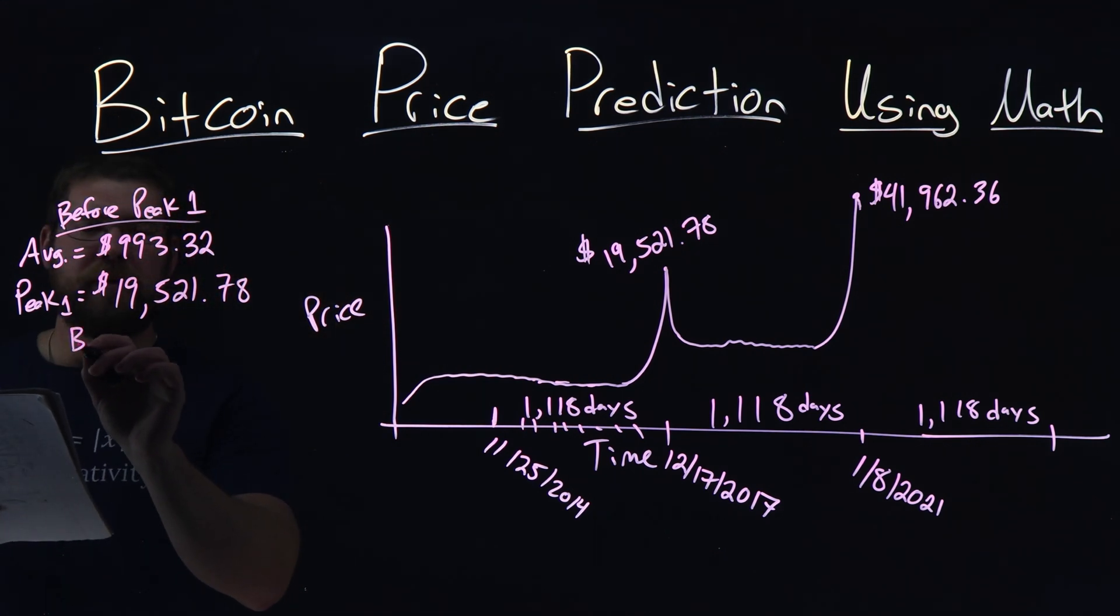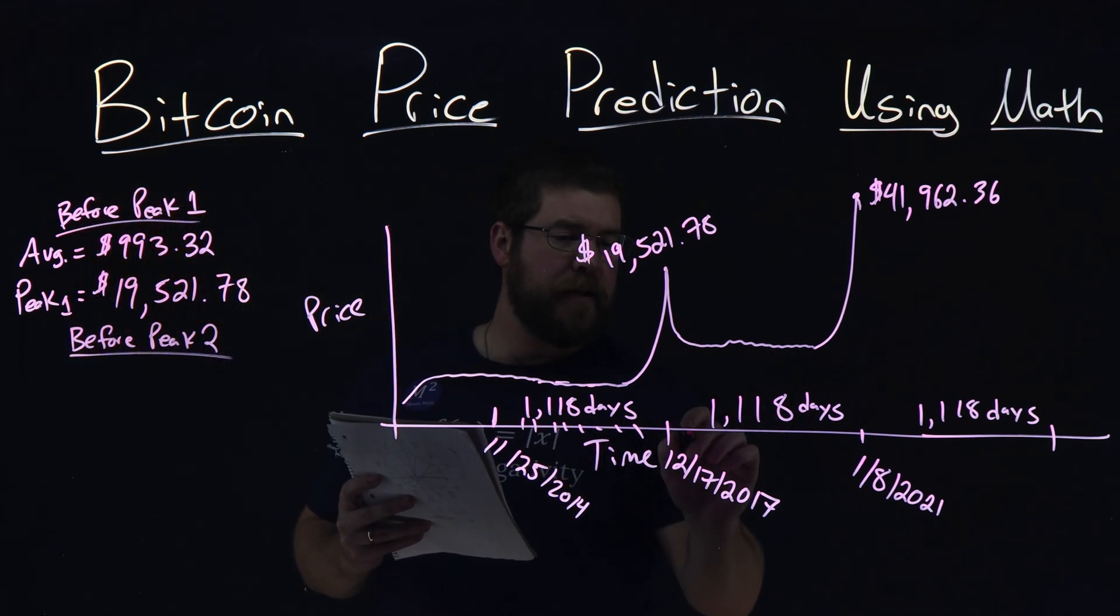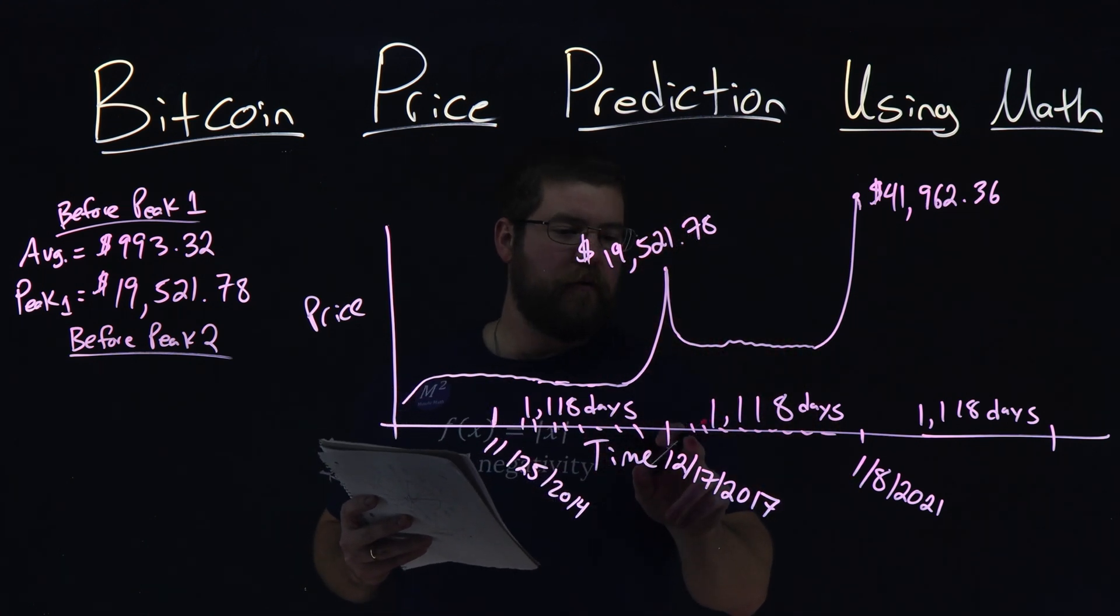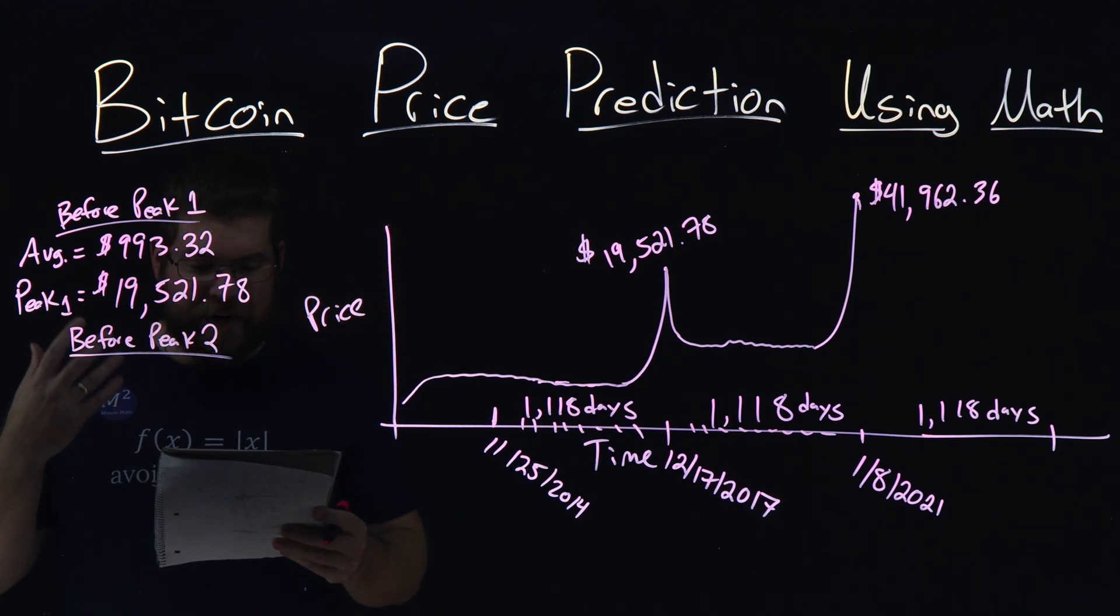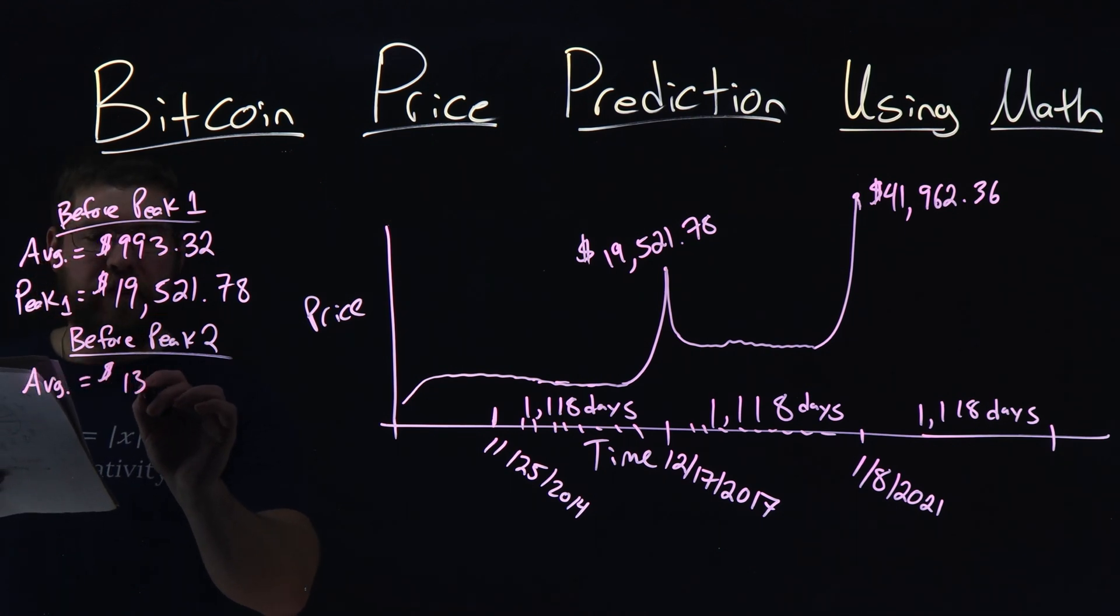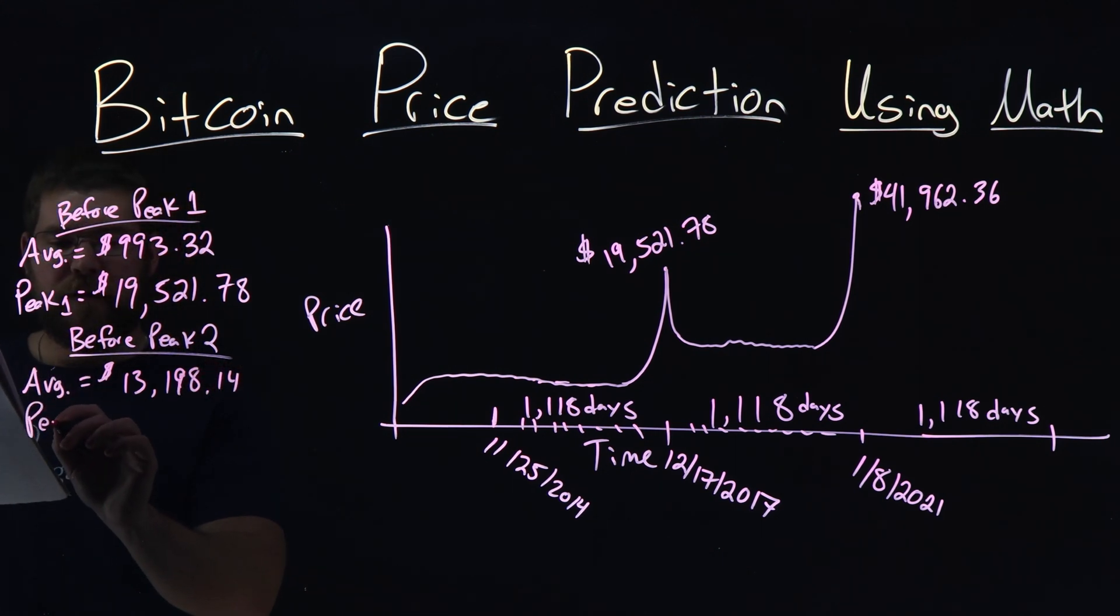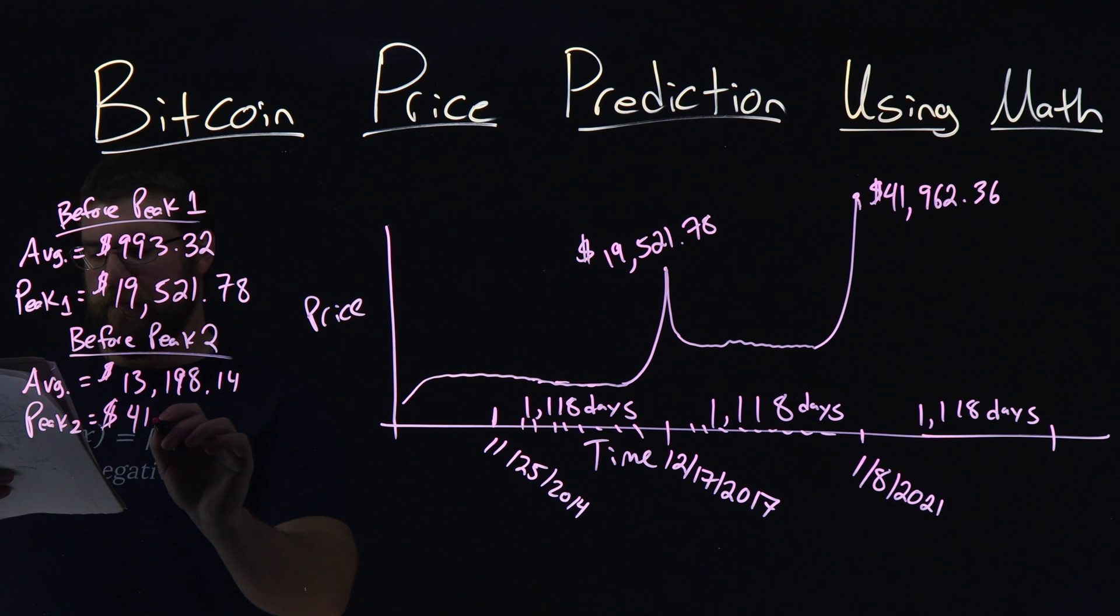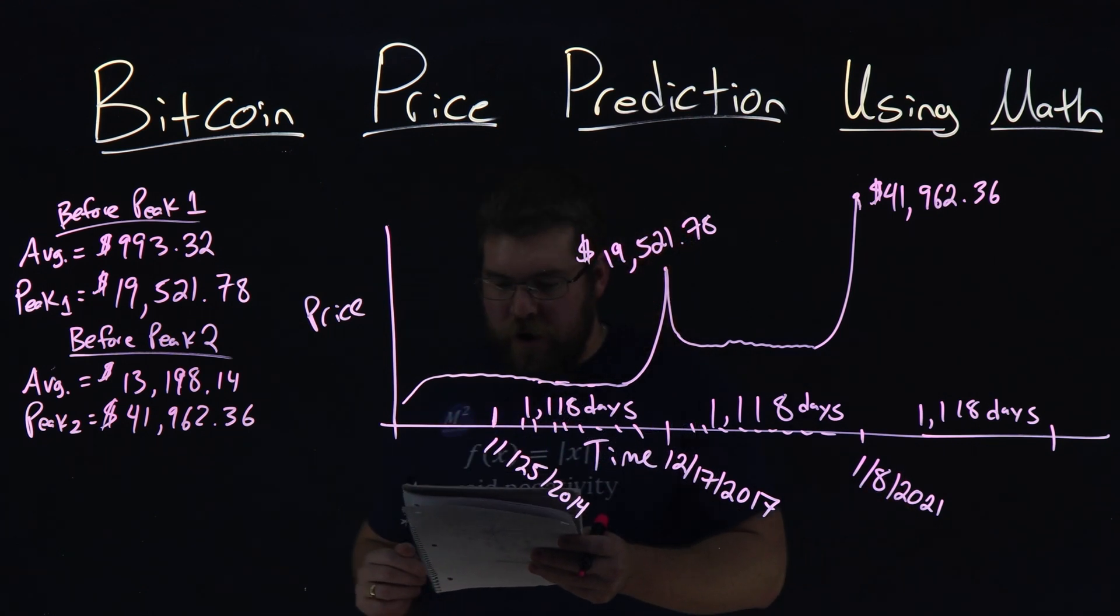Before peak two, same idea. What happened before peak two? Same idea, I broke this down to be every 100 day increments. What was the Y value, the price at those values, from starting at day 100 all the way to day 1,000. So nine value points, and I averaged them out. A lot of information out here so far.